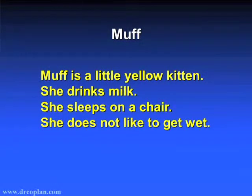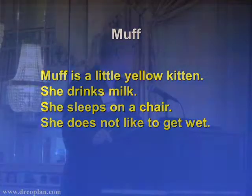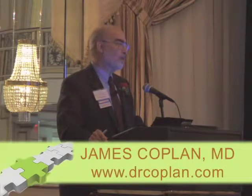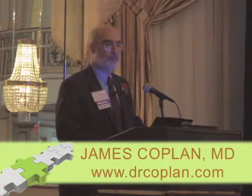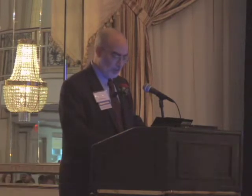Here is a first-grade story: 'Muff is a little yellow kitten. She drinks milk. She sleeps on a chair. She does not like to get wet.' I'll say, 'What is this story about?' — 'It's about Muff.' Then I say, 'How would Muff feel if you gave her a bath?' — 'Clean.' The child read the story flawlessly but cannot put himself into — not the other person's shoes, but you get the idea. He doesn't get it.